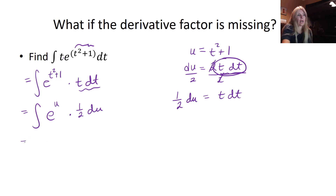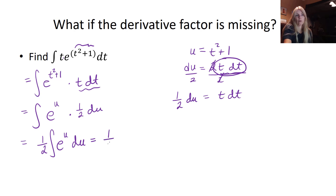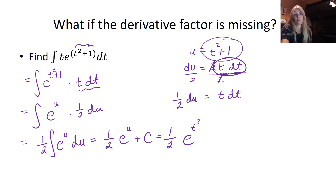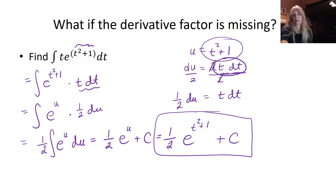Where I see t dt, I substitute one half du, and throw the constant one half out front. So I have one half times e to the u du. The antiderivative of e to the u is e to the u. Finally, don't forget to plug u back in to get your final answer. You can only do this dividing if it's an actual number, not a variable.